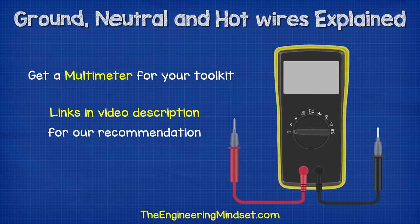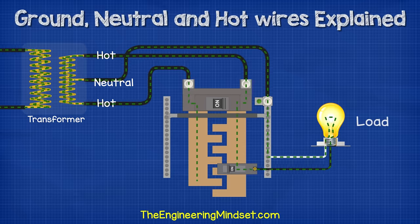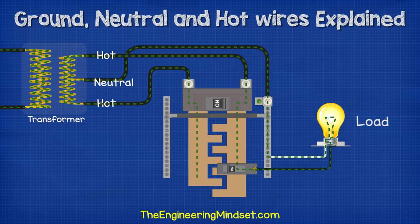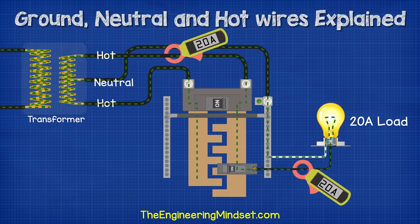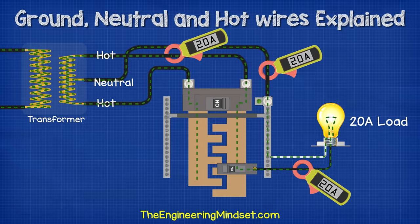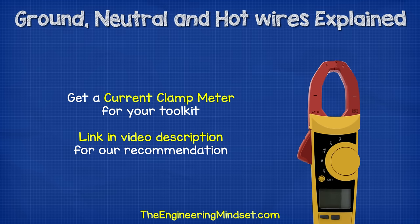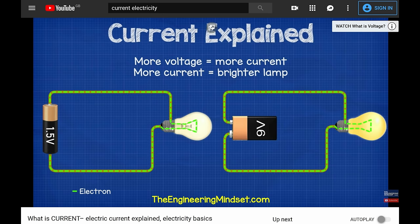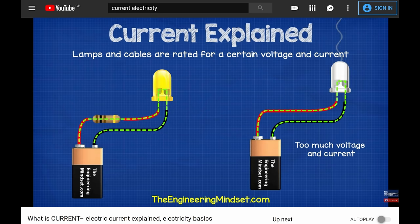If you don't have a multimeter I highly encourage you to get one — links down below for which one to get and from where. We can also measure the current in a cable using a current clamp meter; links down below for that as well. If you don't know what current or amps are then check out our video on electrical current, linked in the video description below.